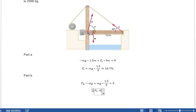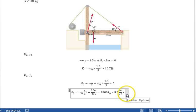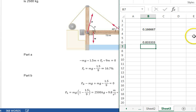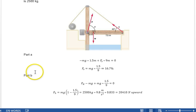So, f at the hinge is equal to mg, 1 minus 1.5 over 9, equals 2,500 kilograms times 9.8 meters per second squared, times 1 minus 0.833 equals 2,500 times 9.8 times 0.833 is 20,408, or 20,410 newtons, 20,410 newtons upward. And that would be it for problem 12.